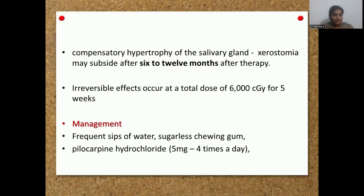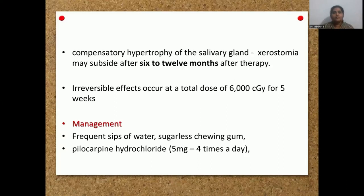Irreversible effects on the salivary gland occur when it is irradiated with more than 6,000 cGy for five weeks continuously — this can cause irreversible damage. Otherwise, with normal radiotherapy doses, the salivary gland will return to its normal function within 6 to 12 months after radiotherapy is complete. For management of xerostomia or hyposalivation, the patient is asked to sip water frequently, sugarless gum can be given, and pilocarpine hydrochloride can be used.